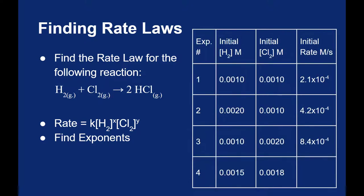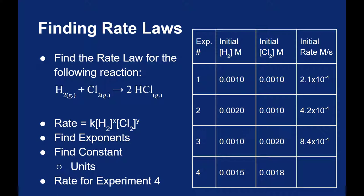We can use this table to find the exponents for our rate law. Once we have the exponents, we can figure out the rate constant, and we'll also consider its units. For experiment number four, no initial rate is given, so once we complete the rate law, we can use it to find that missing rate.